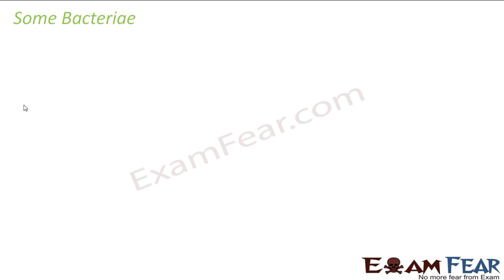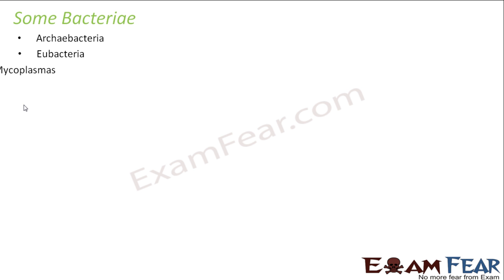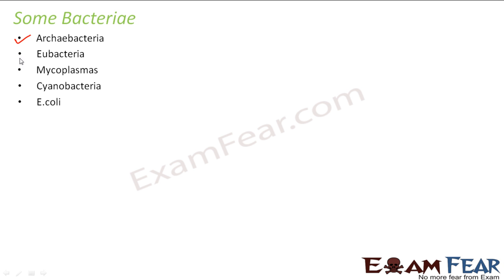Even within the category of bacteria, there are many different types, and not all bacteria follow the same characteristics. That is why we will also study specific groups of bacteria to see how they differ from each other. Some important groups are Archibacteria, Eubacteria, and Mycoplasmas. We will also talk about Cyanobacteria and E. coli. Archibacteria and Eubacteria are two particularly important groups, and we will study each of these in detail.